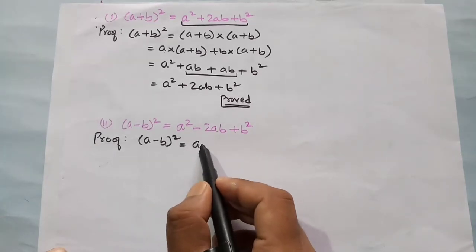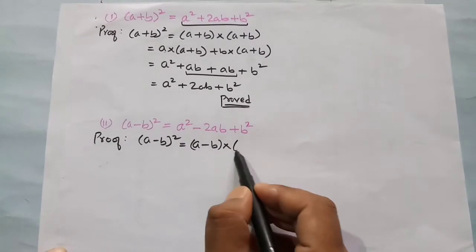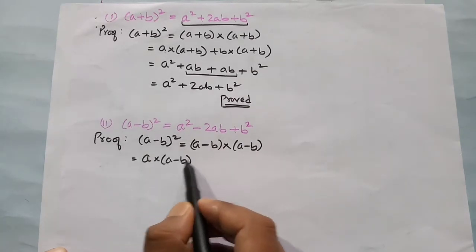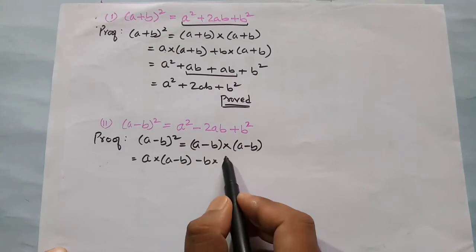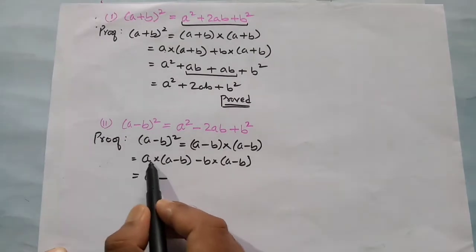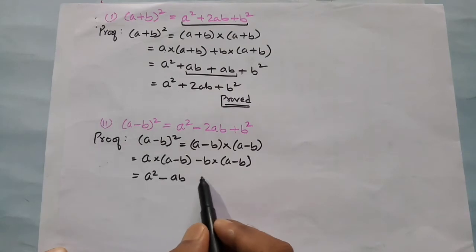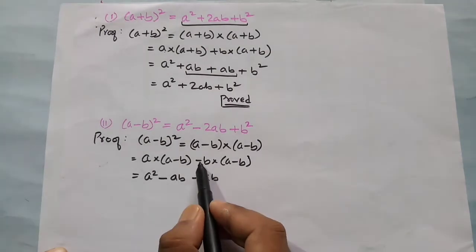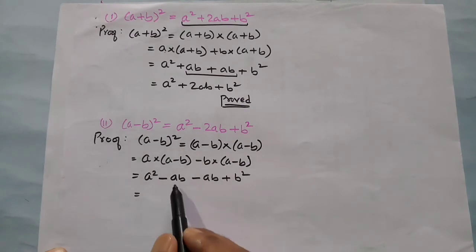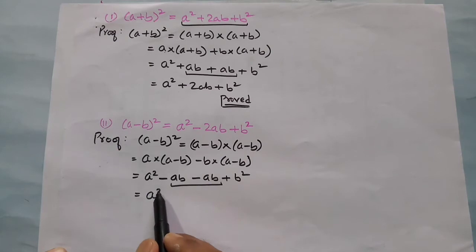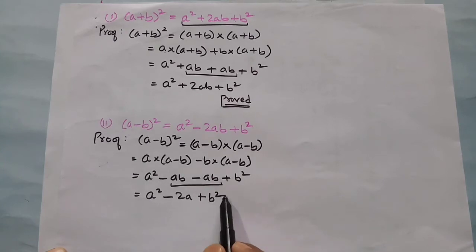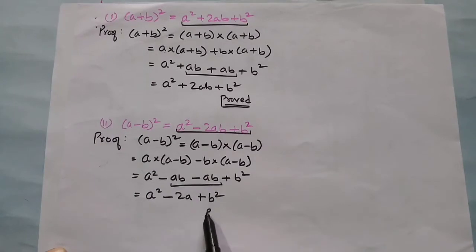To prove: (a - b) whole square = (a - b) into (a - b). Multiplying: a into (a - b) minus b into (a - b), which gives a squared minus ab minus ab plus b squared. Collecting like terms: minus ab minus ab is minus 2ab, so we get a squared minus 2ab plus b squared. This is our second identity.